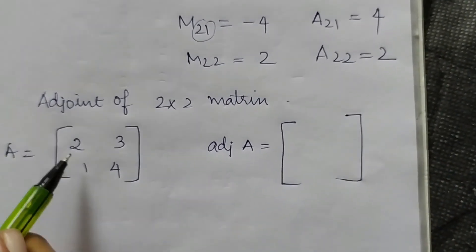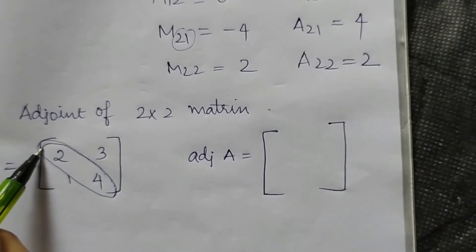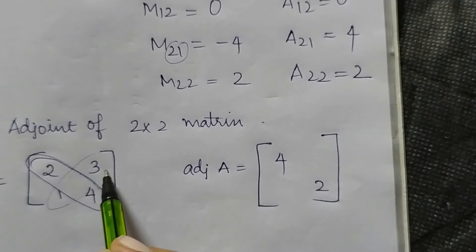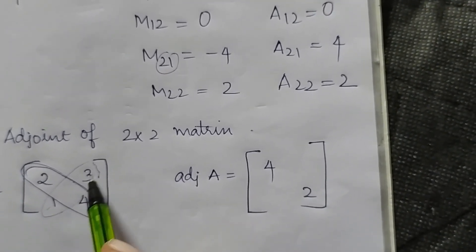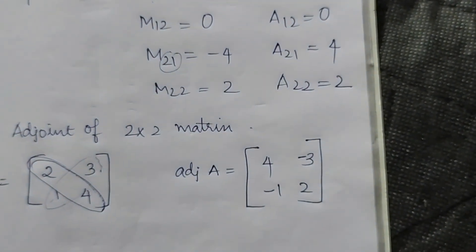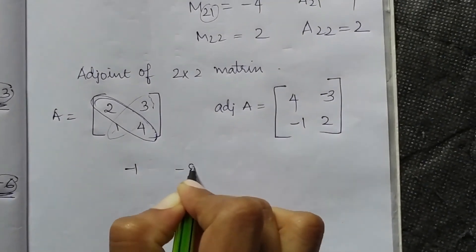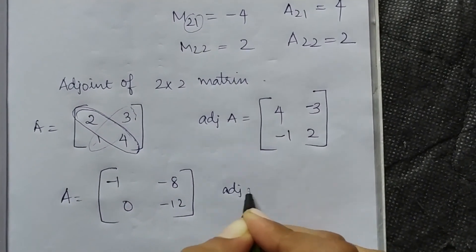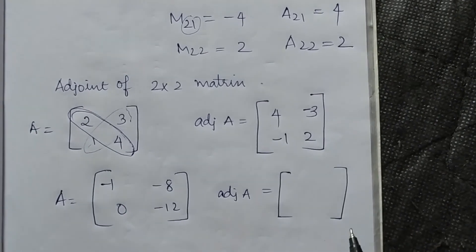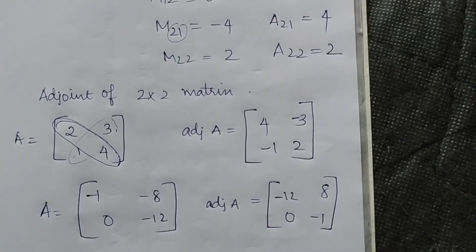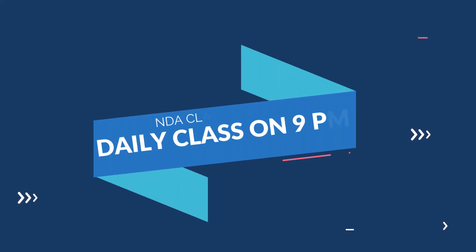For a 2 by 2 matrix, just interchange the diagonal elements and change the sign of the off-diagonal elements. For example, with matrix having elements minus 1, minus 8, 0, minus 12: the adjoint swaps the diagonal to get minus 12 and minus 1 on the diagonal, with sign change for the off-diagonal, giving the adjoint of A.